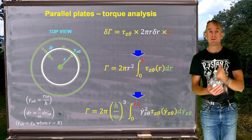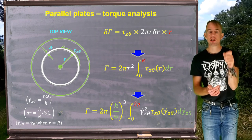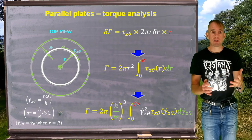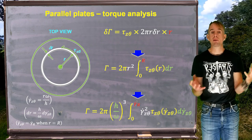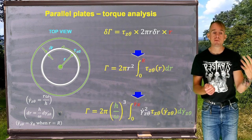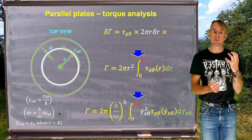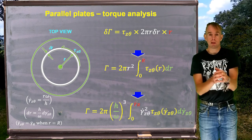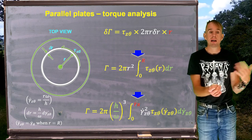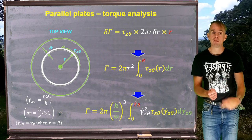After substitution, one h/ω term comes from differentiating r (so dr → dγ̇_zθ), and the other two h/ω terms making up the cube come from the r² term, now inside the integral — which is where the γ̇_zθ² term comes from. Tau_zθ remains unchanged, and the 2π grouping stays outside the integral. We also change the integration limits: from zero at the centre (where γ̇_zθ = 0, since γ̇ = rω/h and r = 0) to γ̇_R at the outer rim (when r = R).